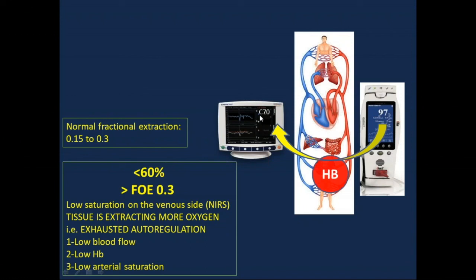If you have high oxygen extraction or saturation at the venous side less than 60%, that could be due to low saturation on the venous side, which can be due to low blood flow, hypotension or low cardiac output, low hemoglobin, or low arterial saturation.